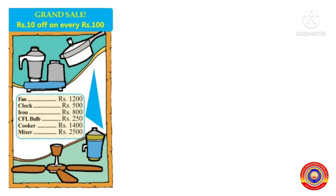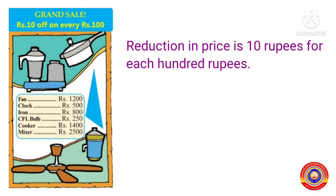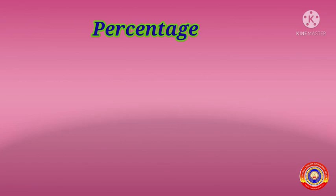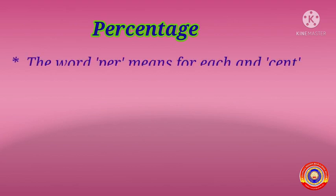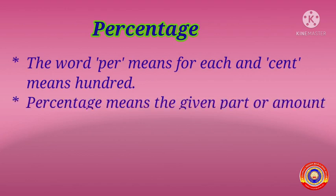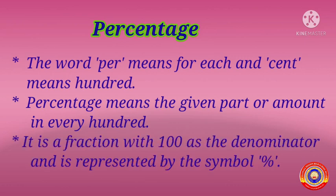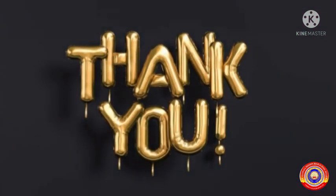In this activity we found out that the reduction price is 10 rupees for each 100 rupees. We can say that it is a 10 percent reduction. 10 percent is written like this. In this chapter we are going to learn about percentage. The word 'per' means 'for each' and 'cent' means 100. Percentage means the given part or amount in every 100. It is a fraction with 100 as the denominator and is represented by the % symbol. That's all for today children. We shall discuss more activities on percentage on the next day. Thank you.